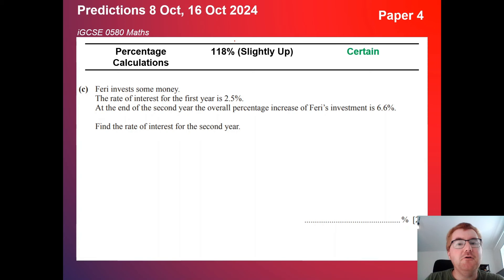Percentage calculations. We're into the certain category. Not a surprise here. The difficulty can vary from fairly straightforward questions to something a little bit strange as well. So something like this here. So the rate of interest for the first year is something. End of the second year, the overall is this percentage, work at the second year. So these can be a bit tricky, particularly those part C questions and part D questions as well.